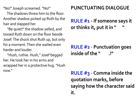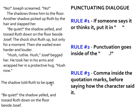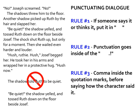One of the things I sometimes see you do as a writer that I don't want to see is telling the reader that a character is speaking rather than actually having the character speak. Dialogue is when the character actually speaks — "Be quiet," the shadow yelled and tossed Ruth down on the floor beside Joseph. But sometimes I see: "The shadow told Ruth to be quiet" — you're telling me the character is doing that rather than showing me. I don't want to see that in your narrative writing today.